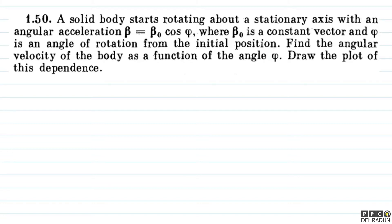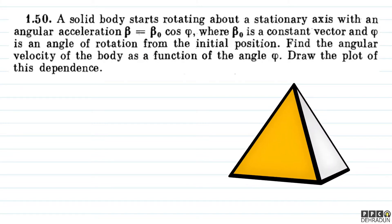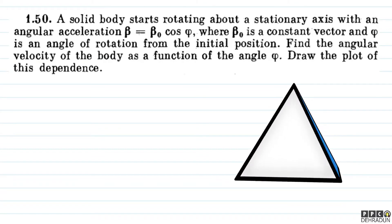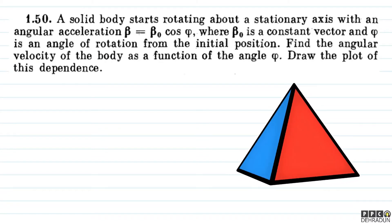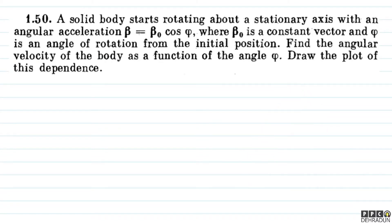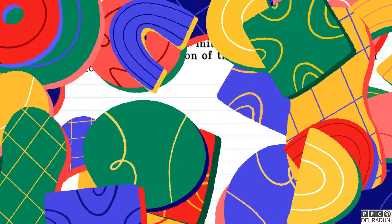The question says: a solid body starts rotating about a stationary axis with an angular acceleration beta equal to beta-naught cos phi, where beta-naught is a constant vector and phi is the angle of rotation from the initial position. Find the angular velocity of the body as a function of the angle phi, and draw the plot of this dependence.